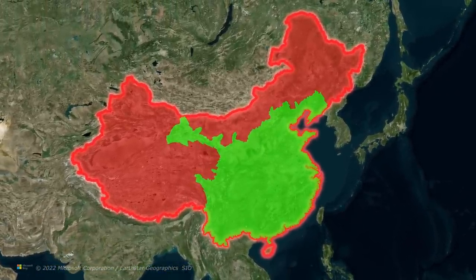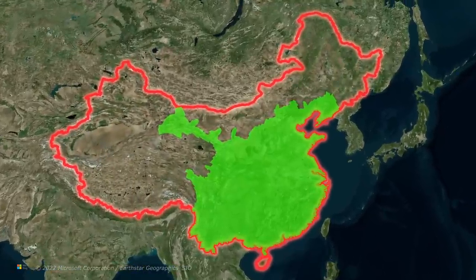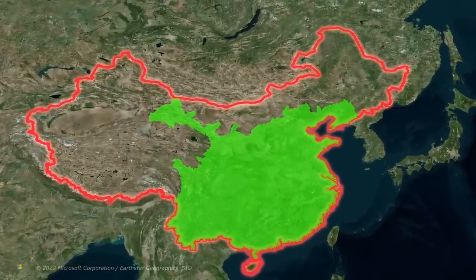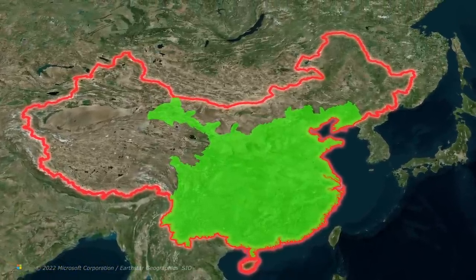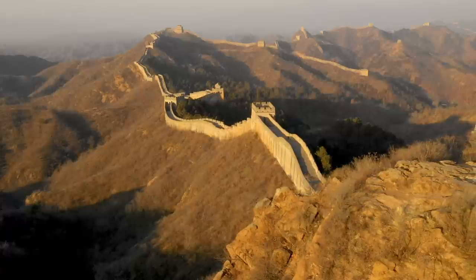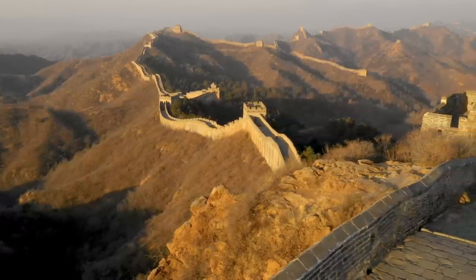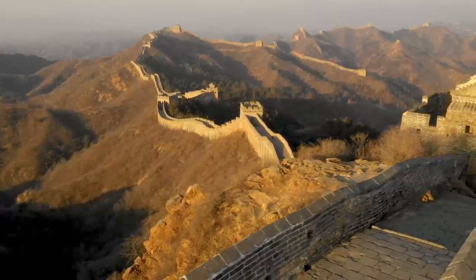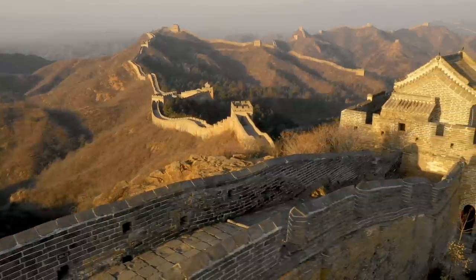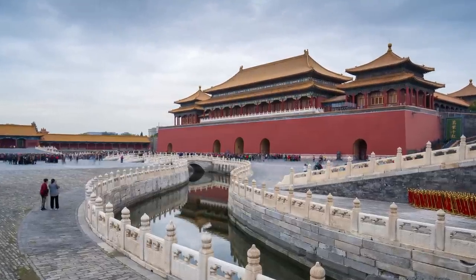Without the buffers, the core would be exposed, soft, vulnerable — dense, massed with stationary populations of farmers ripe for plunder. So historically, Chinese dynasties sought to accommodate, influence and assimilate the buffer regions with complex diplomacy and tributary systems rather than forcibly control them.